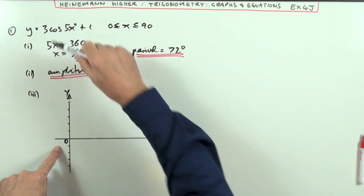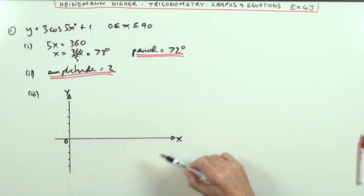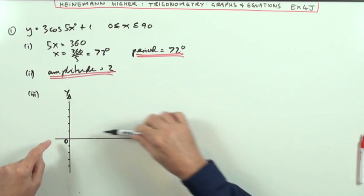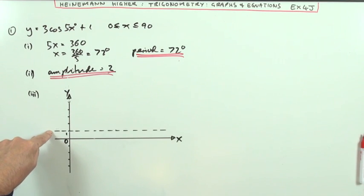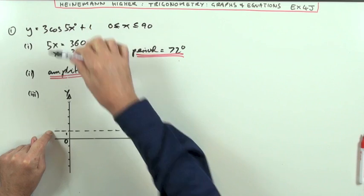It oscillates about a line here at 1. Then the cosine is going to start with an amplitude of 3, so it's going to start 3 above it at 4 and go down to 3 below it at negative 2.